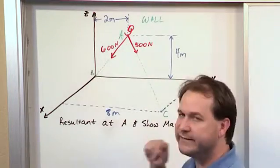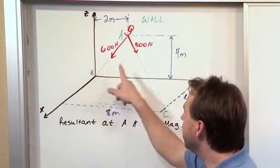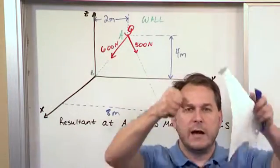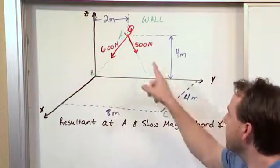And I'm pulling on one rope with 600 Newtons oriented this way. And I'm pulling on the other rope attached to the same point with 500 Newtons. So I've got this hook. I'm pulling in two different directions with different amounts of force.